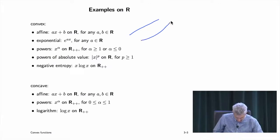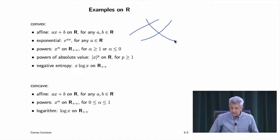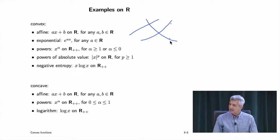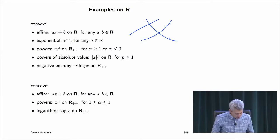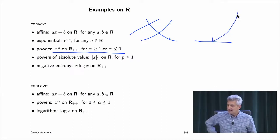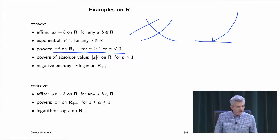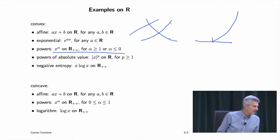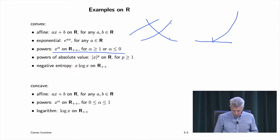Exponentials look either like that or like that — this is if a is positive, that's if a is negative. These are convex; the curvature is positive. For powers, if alpha is bigger than 1 on R+, the function gets more and more convex with higher power. It's also convex for alpha less than 0.